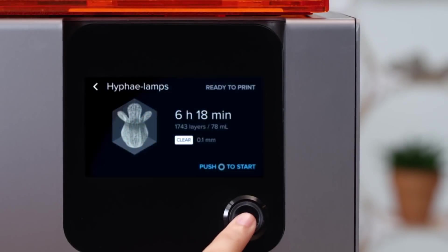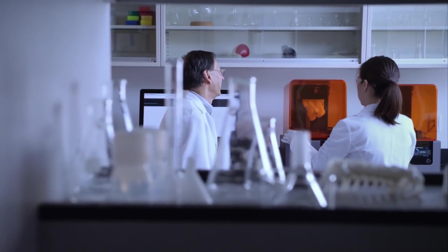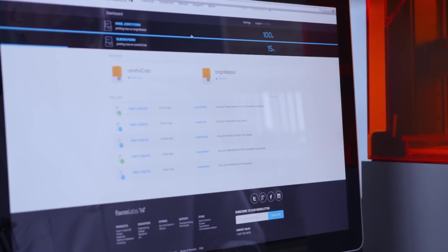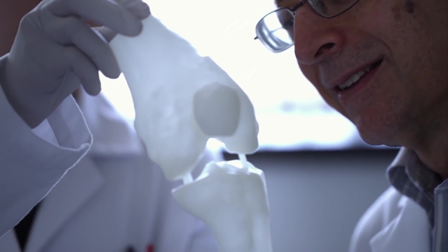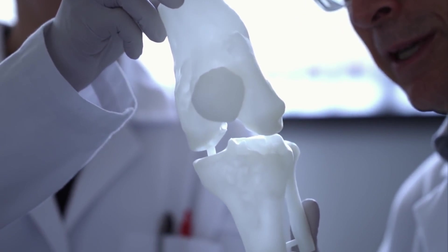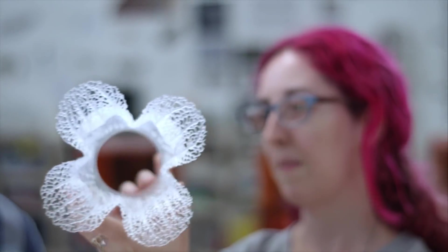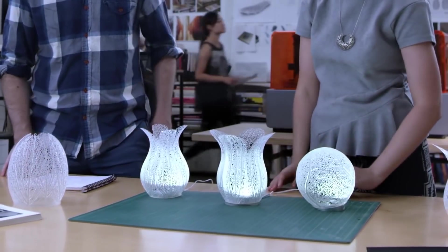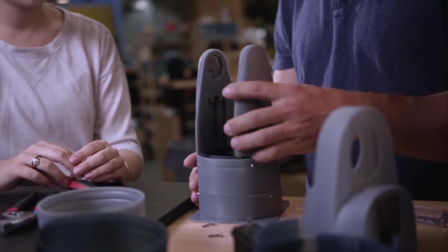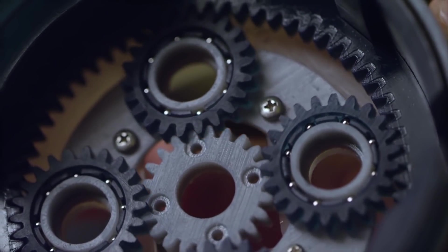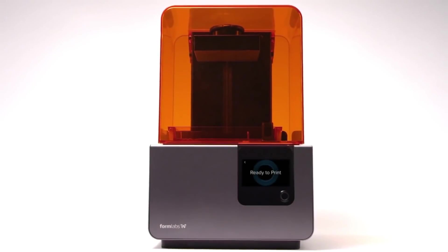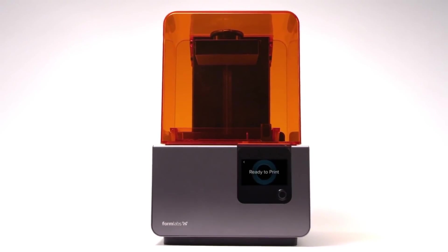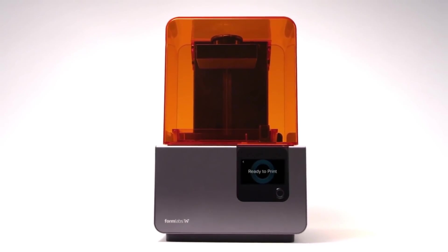With wireless connectivity, sending prints to your machine is simple. The Form 2 is built for collaboration. You can monitor progress, receive notifications, or easily share your printer with your team. Engineered for precision, designed for reliability. The Form 2, the most advanced desktop 3D printer ever created.